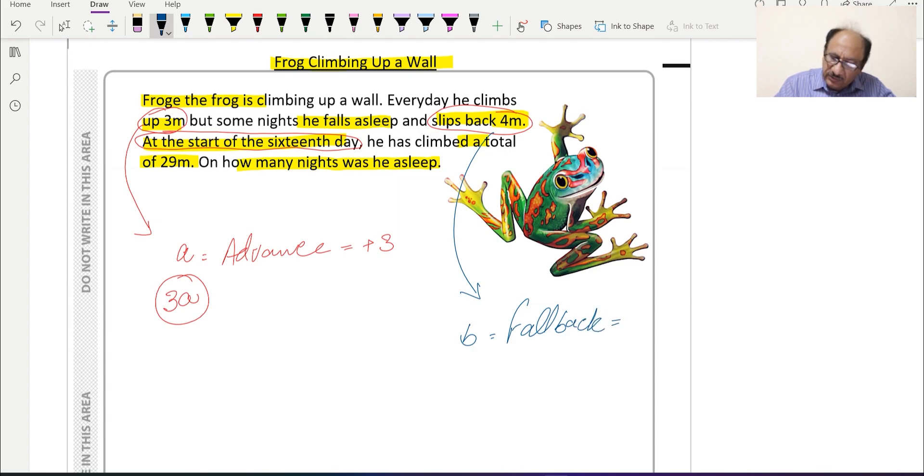It will be three meters going up and minus four, so the net will be minus one. In the day he is slipping, he has already climbed three meters and slipped four meters, so net is minus one. We'll be taking 'b' as net as minus one.